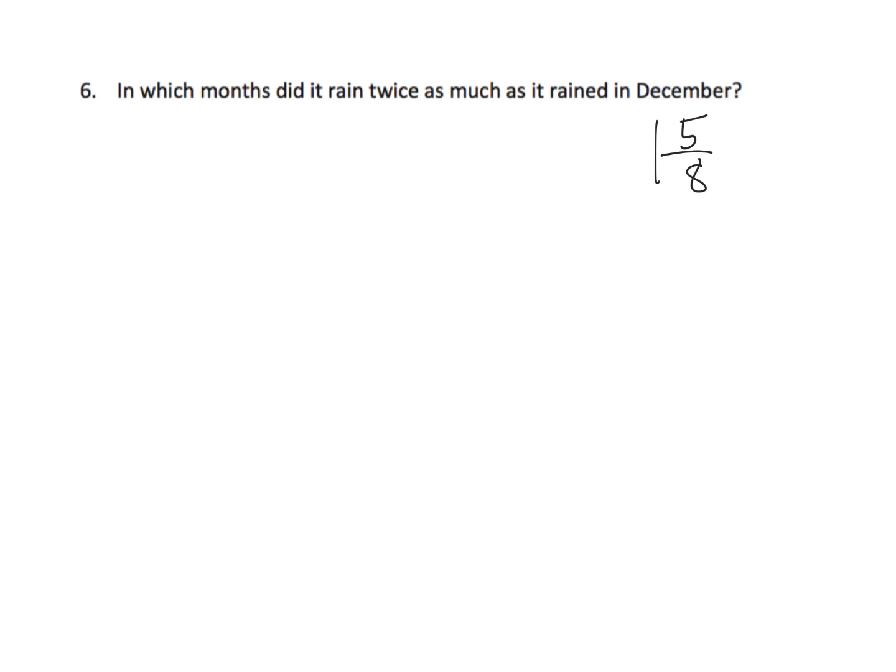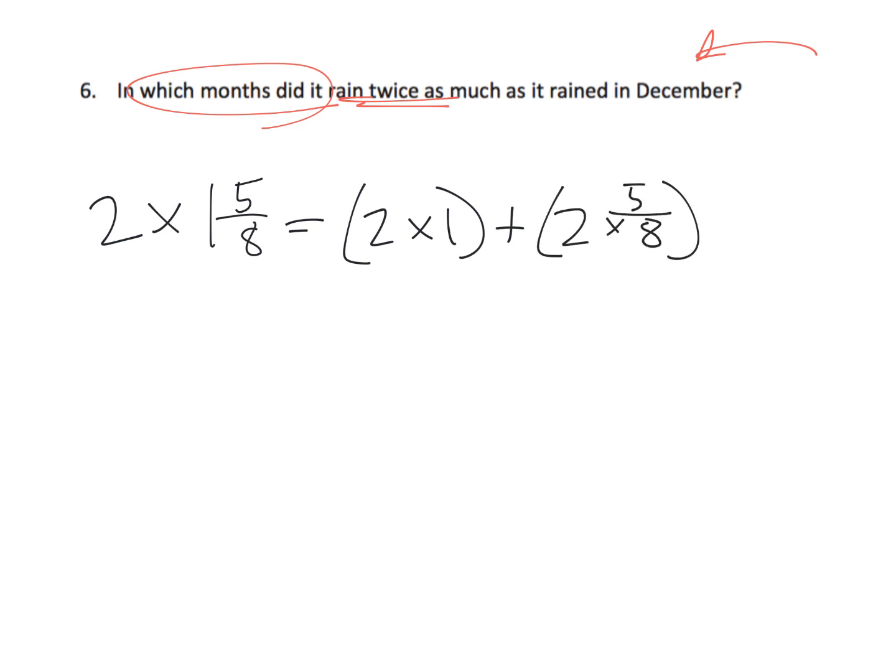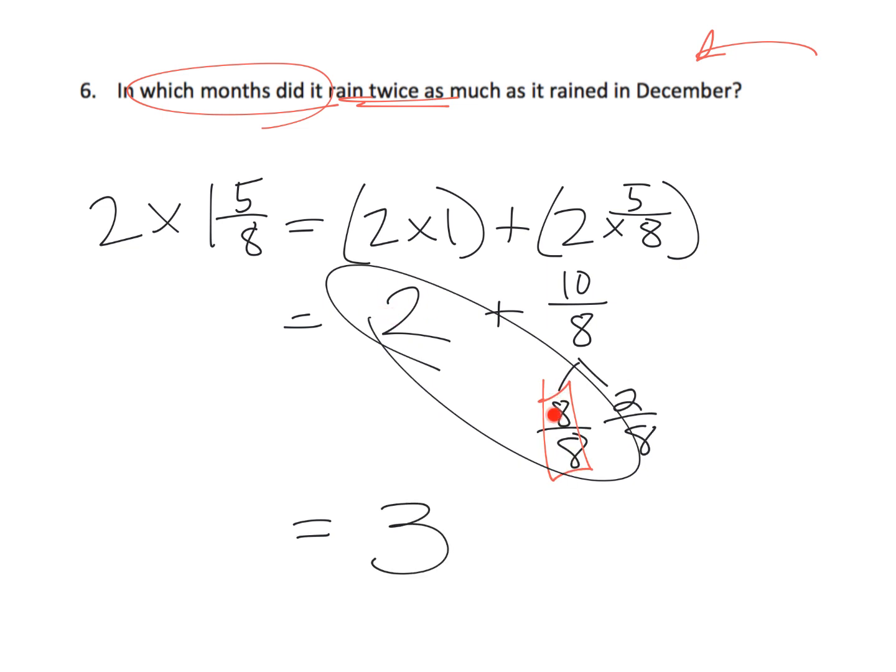So in this one, it says, in which months did it rain twice as much as it rained in December? So we started off with, I peeked at the list from a couple of slides ago, and I saw that in December it rained one and five-eighths inches. So now we know that we want to know this twice as much. So that means we're going to be two times one and five-eighths. So that's going to be two times one plus two times five-eighths. And two times one is two plus two times five-eighths is two and ten-eighths. Parents and teachers, make sure your students understand how we went from here to here. And then this, we know, is eight-eighths plus two-eighths. So that eight-eighths equals one whole. So we now have three wholes because we had two up here plus one more. So that's three wholes plus the two-eighths left over inches.